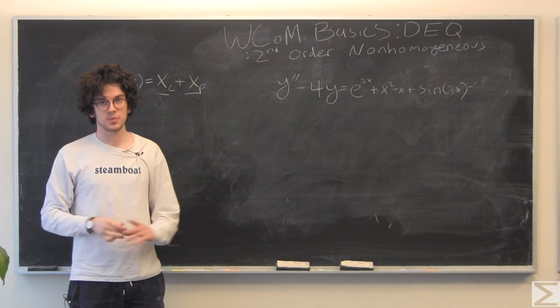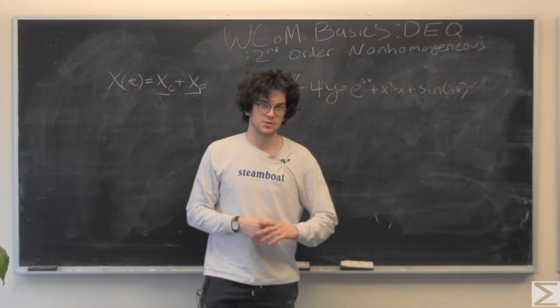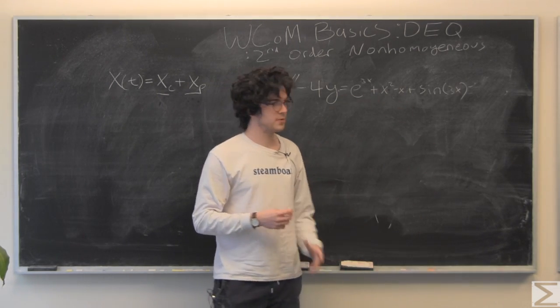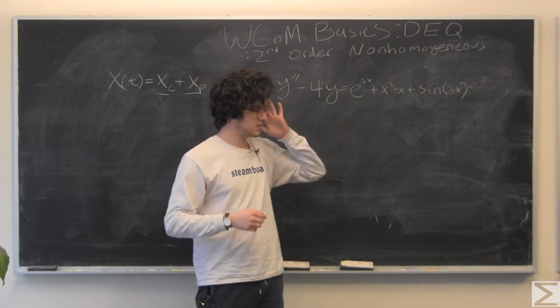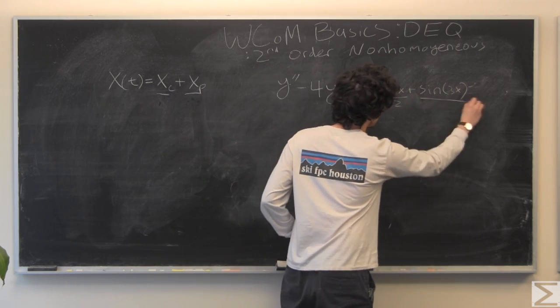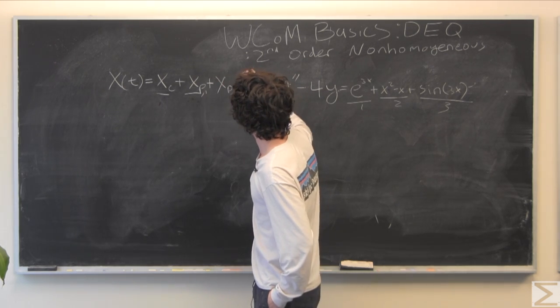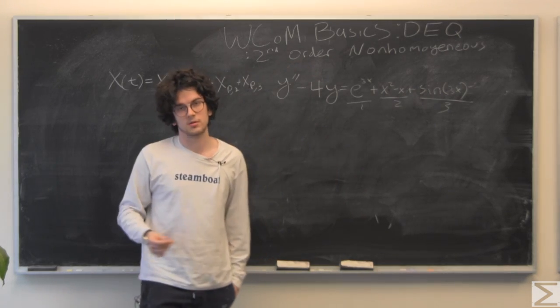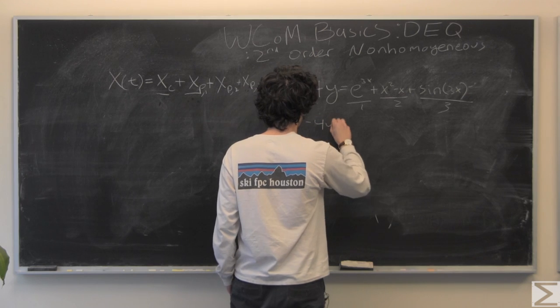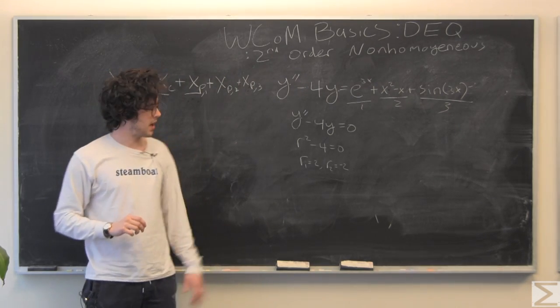This looks really messy, but before I jump into this example, it's worth noting that solving for your particular solution follows linearity because of the superposition principle that every solution to a linear system is also going to be linear. So, in this case, we have kind of three parts, our exponential, our polynomial, and our sinusoidal. So, we're going to have three particular solutions.